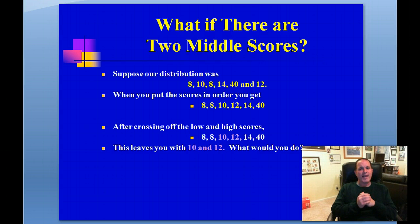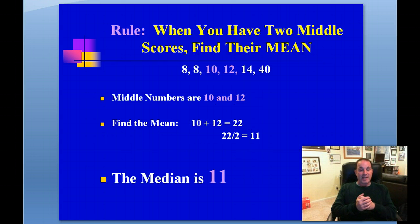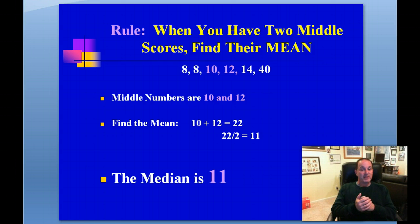What happens if there are two middle scores? For example, if our distribution were 8, 10, 8, 40, 12, and 14, putting them in order gives: 8, 8, 10, 12, 14, and 40. After crossing off the low 8 and high 40, then crossing off 8 and 14, we're left with two middle numbers: 10 and 12. Simply take the average of those two numbers. 10 plus 12 equals 22, divide by 2, and the median is 11. The median is not affected by extreme scores because we cross those out.